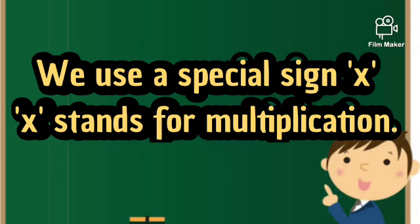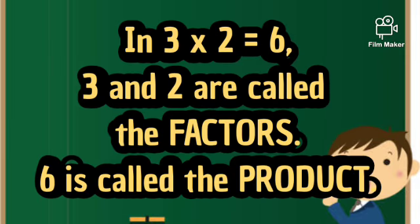We use a special sign into. Into stands for multiplication. In 3 × 2 = 6, three and two are called the factors whereas six is called the product.